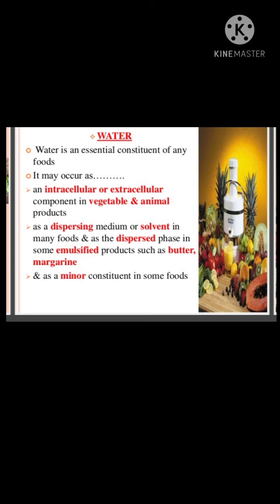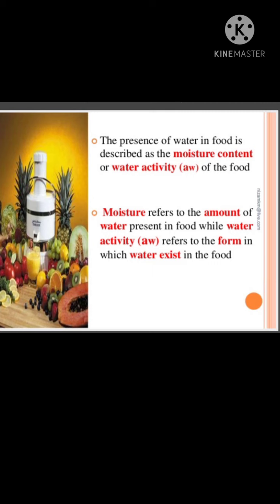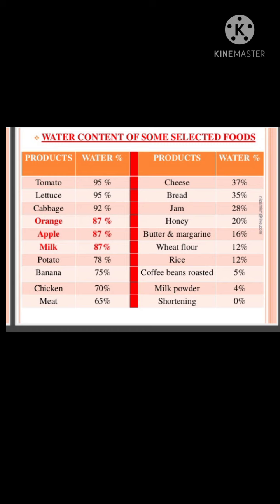Water is abundant in all living things and in almost all food unless steps have been taken to remove it. Most natural foods contain around 70 percent water by weight, and most fruits and vegetables contain up to 90 percent water. Water can be present as intracellular or extracellular fluid, as a dispersing phase in emulsified products like butter or margarine, or as a minor constituent in some foods. The presence of water in food is described as moisture content or water activity — moisture content indicates how much water is present, while water activity describes in what form the water exists.